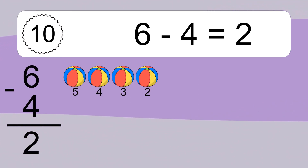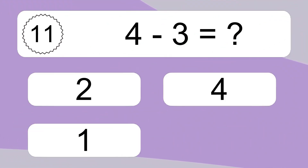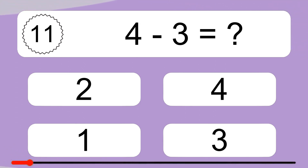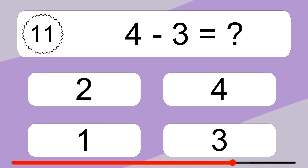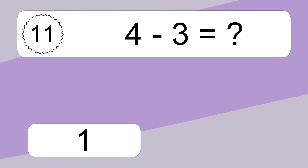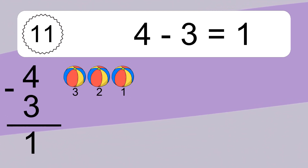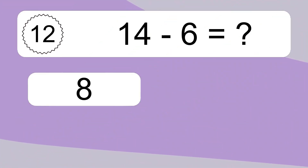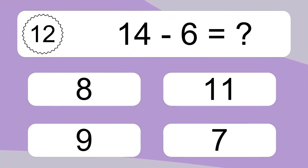6 minus 4 equals 2. Let's count it: 5, 4, 3, 2. 4 minus 3 equals what? 4 minus 3 equals 1. Let's count it: 3, 2, 1.